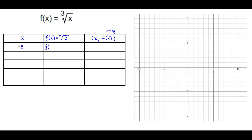If we want to find f of negative 8, we want to find the cube root of negative 8. In other words, what number do we have to cube to get negative 8? Well, the answer is negative 2, because negative 2 times negative 2 times negative 2 gives us positive 8. So therefore, negative 8, negative 2 is our first ordered pair.